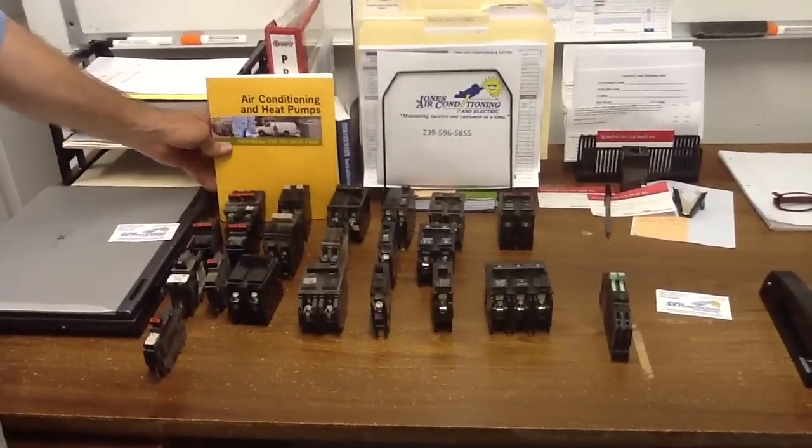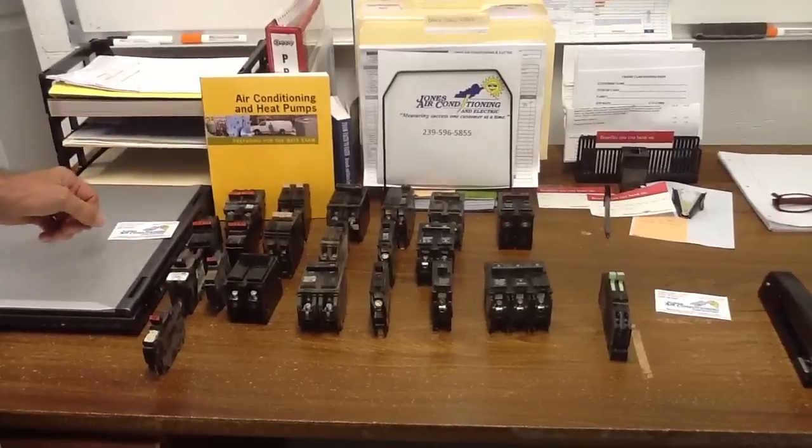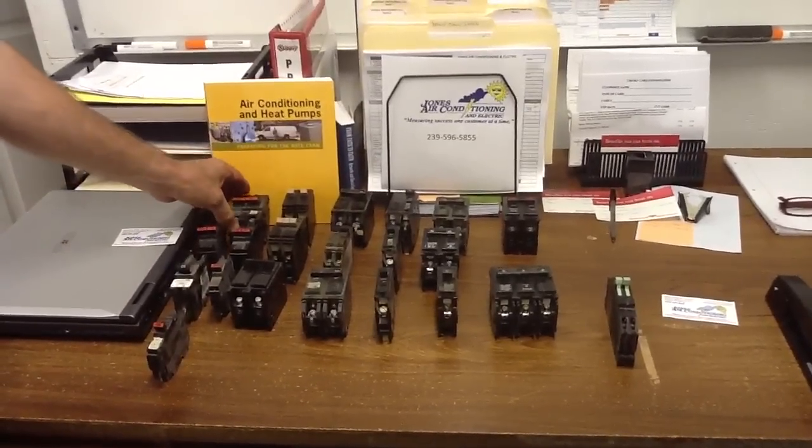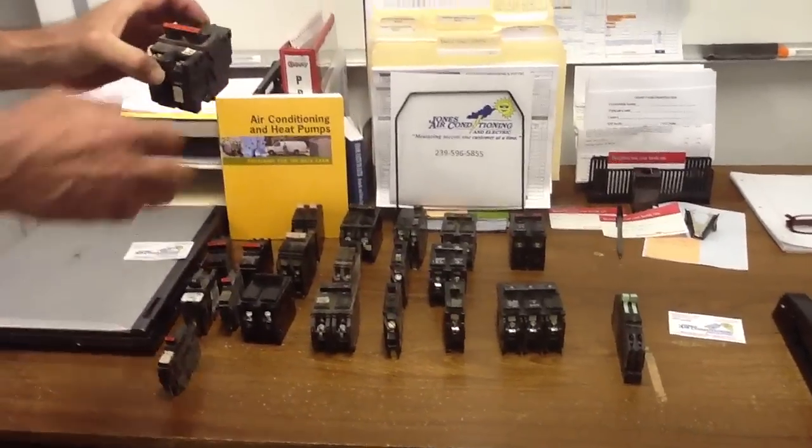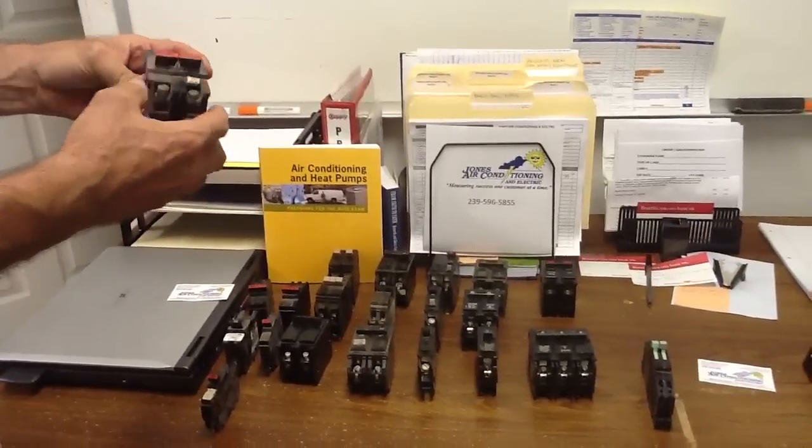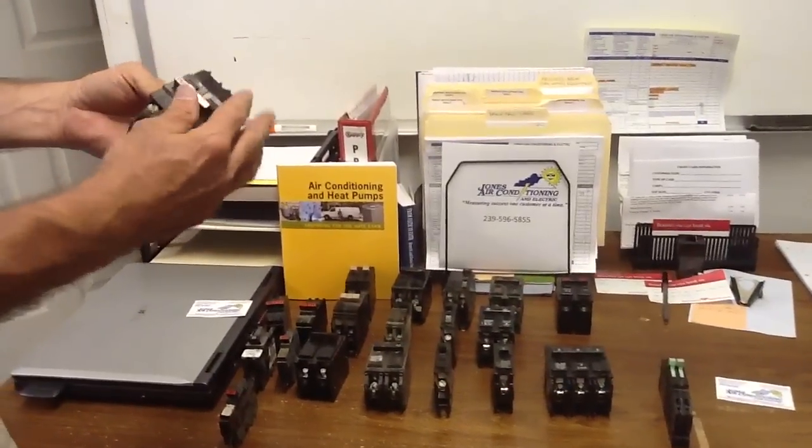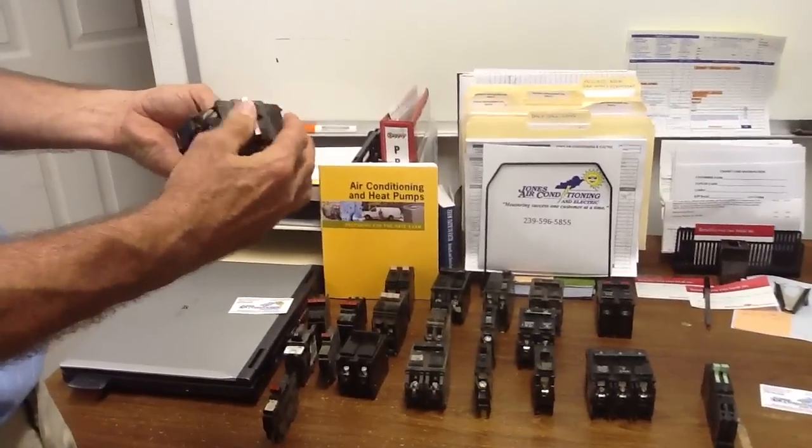We're going to talk today about different breakers that's on the market. The first breaker I'm going to pick up is a Federal Pacific. You look at the red markings here, it's very distinguished. They're very hard to open and close.